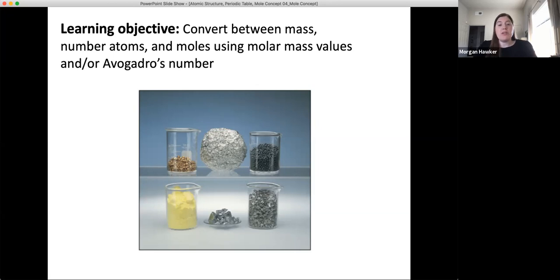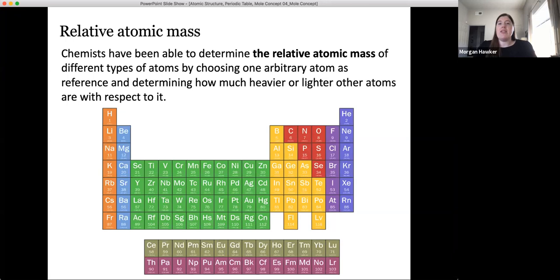Take a look at the picture below where you'll see six different samples and each one is a different element. If you were asked to quantify the number of atoms in each sample, how would you go about doing that? To figure out the number of atoms in a sample, we first need to discuss the concept of relative atomic mass.